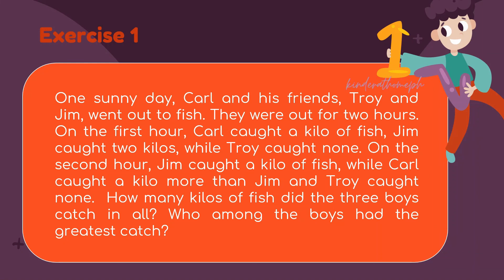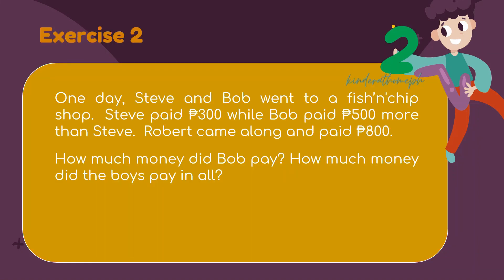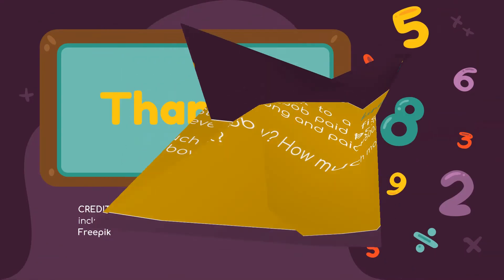Exercise 2: One day, Steve and Bob went to a fish and chip shop. Steve paid 300 pesos, while Bob paid 500 pesos more than Steve. Robert came along and paid 800 pesos. How much money did Bob pay, and how much money did the boys pay altogether? Thanks, see you next time!